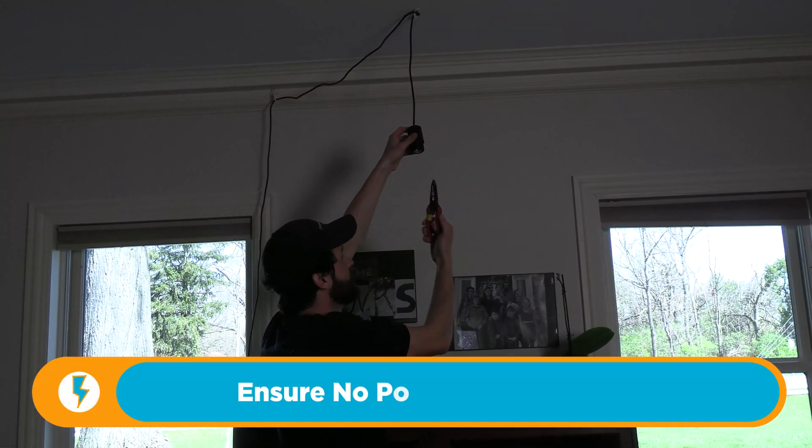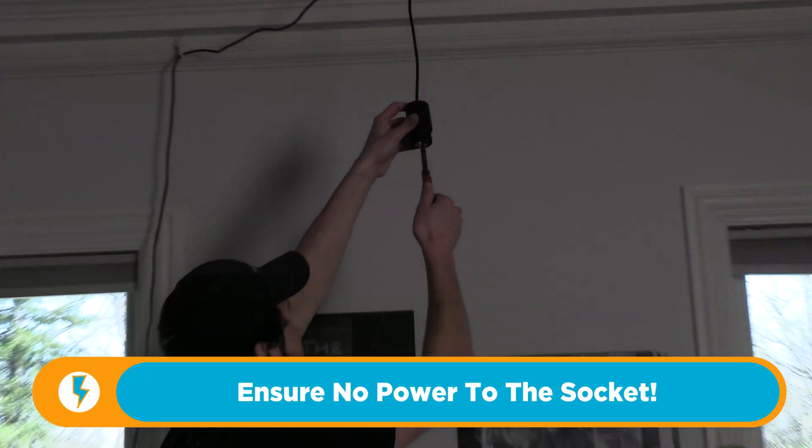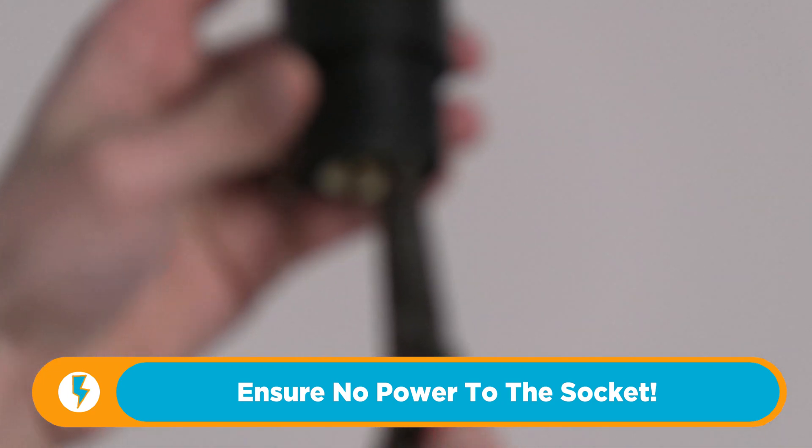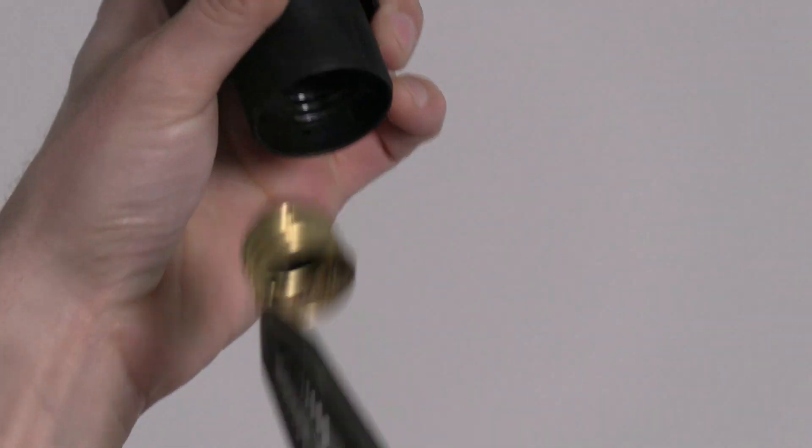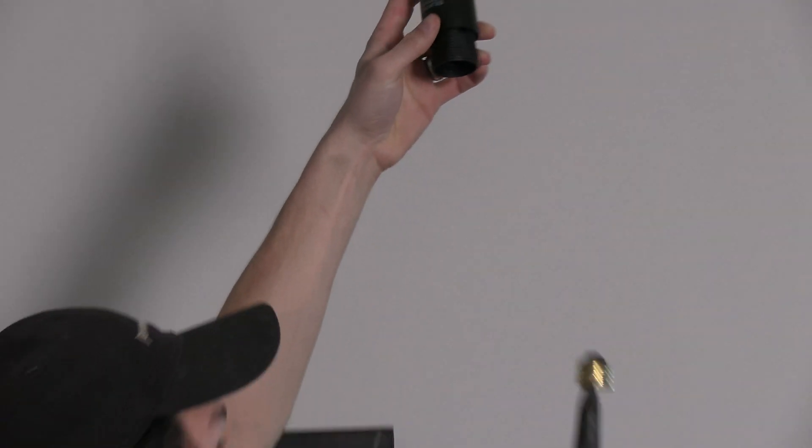What I'm going to do is use my insulated Milwaukee needle nose pliers. I'm going to grab the shell and I'm going to turn it. Oh, it is turning. There it comes. Boom. That's it.